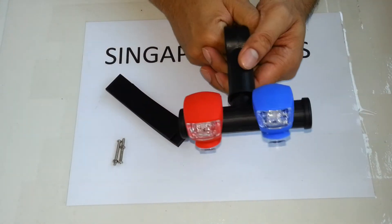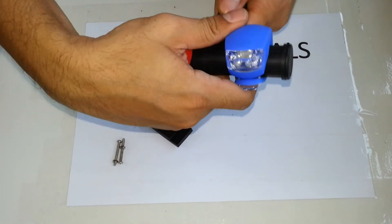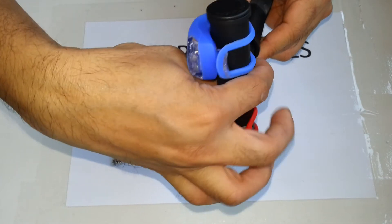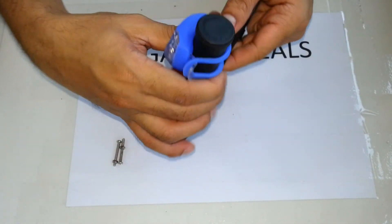You can mount this onto your handlebar just like that. You can remove this, and then you can actually orient it in a vertical manner as well, depending on your preference.